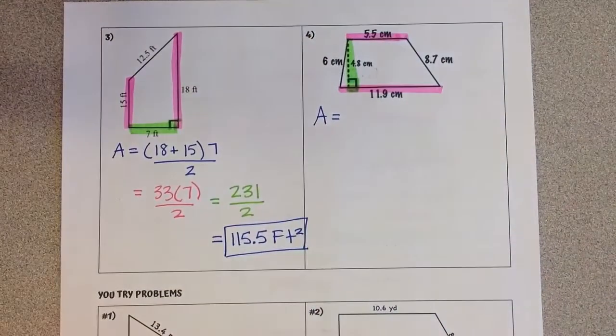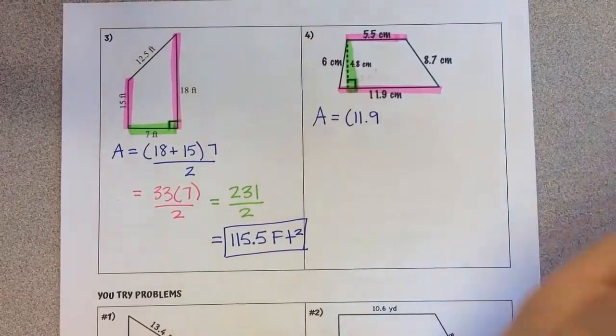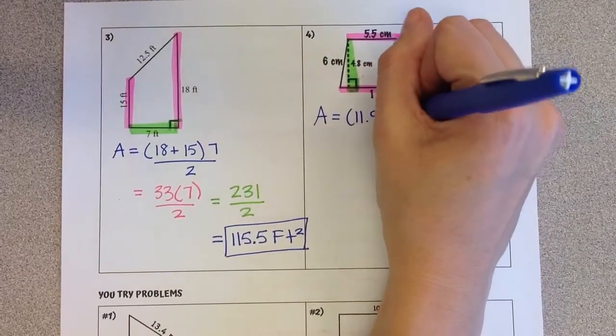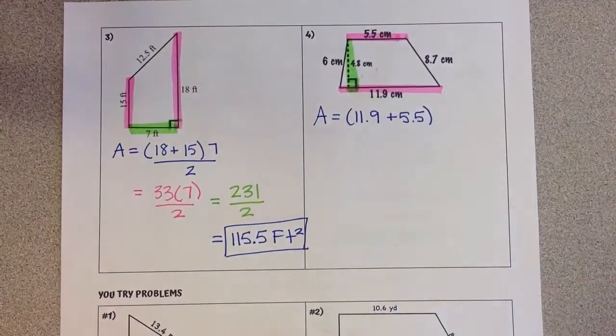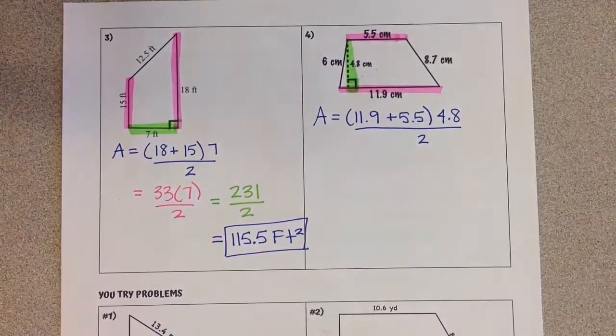Area equals our base of 11.9 plus our base 2 of 5.5, times our height of 4.8, divided by 2.